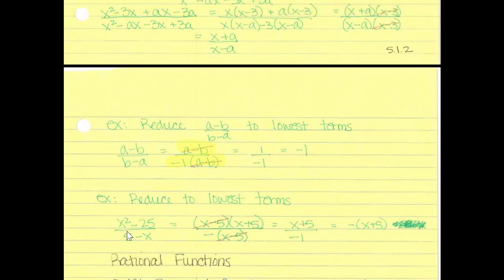For x squared minus 25 over 5 minus x: factor the numerator into x minus 5 times x plus 5. Factor negative 1 from the denominator to get negative 1 times x minus 5. The x minus 5 factors cancel, leaving x plus 5 over negative 1. We rewrite this as negative 1 times the quantity x plus 5, or simply negative times x plus 5.